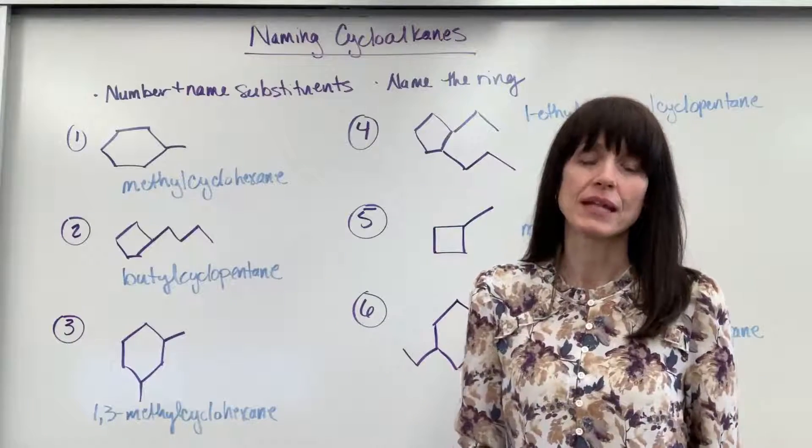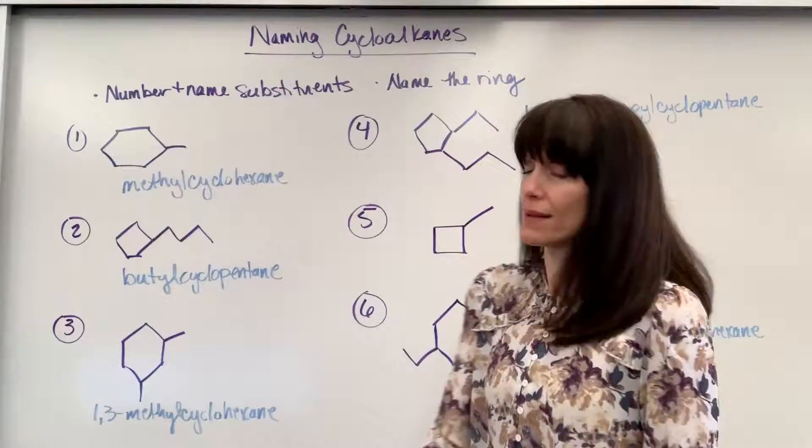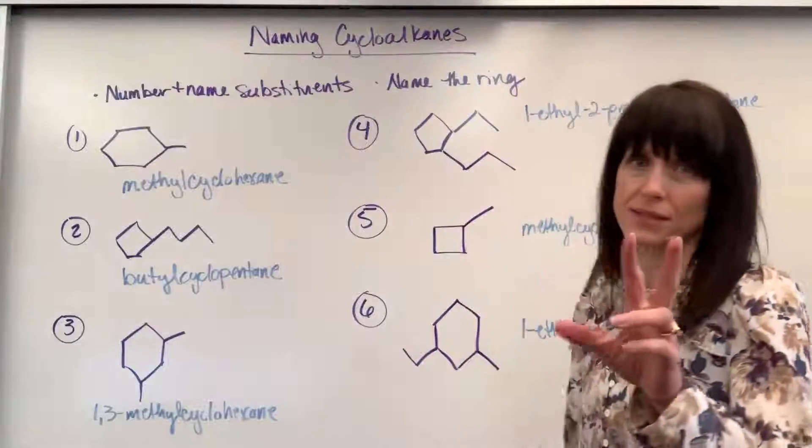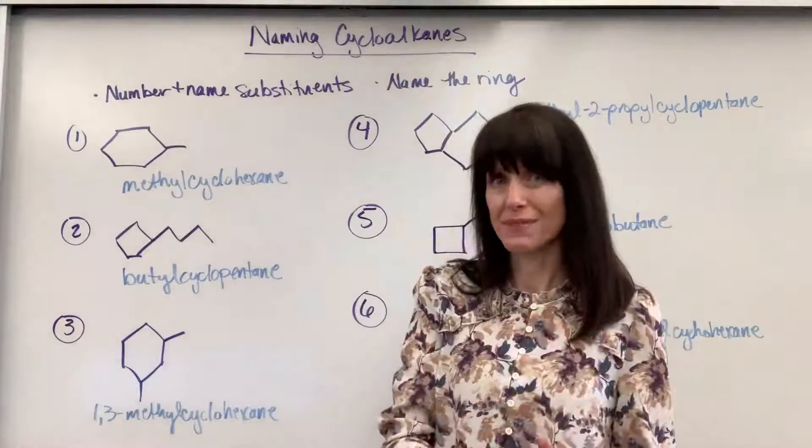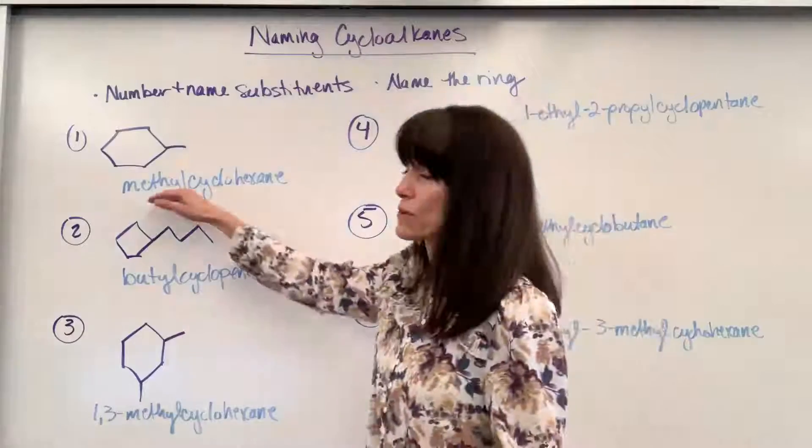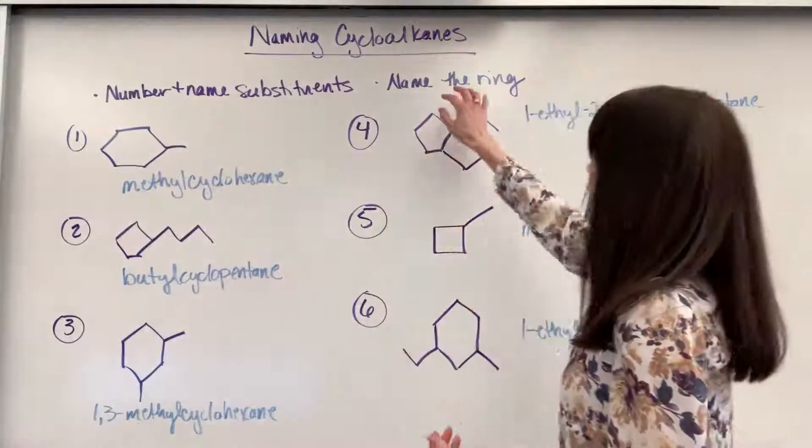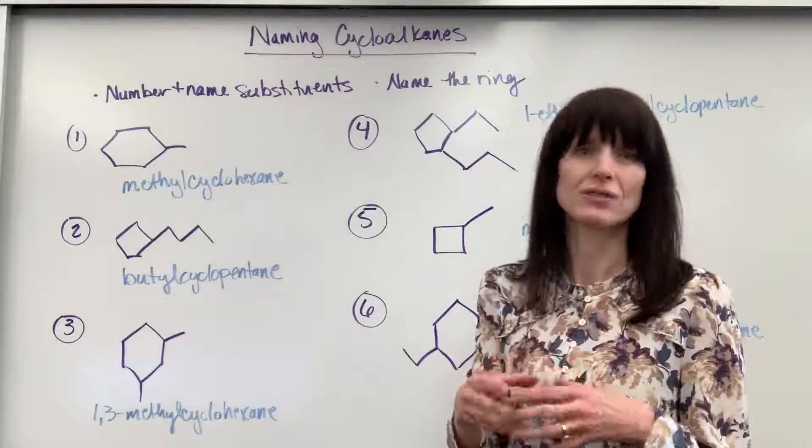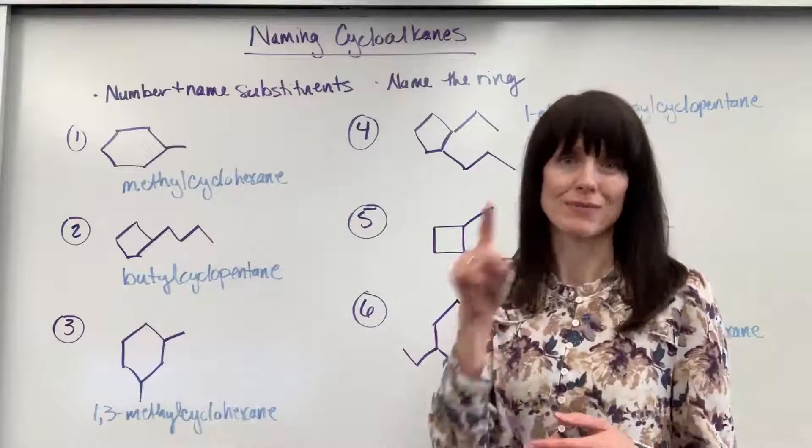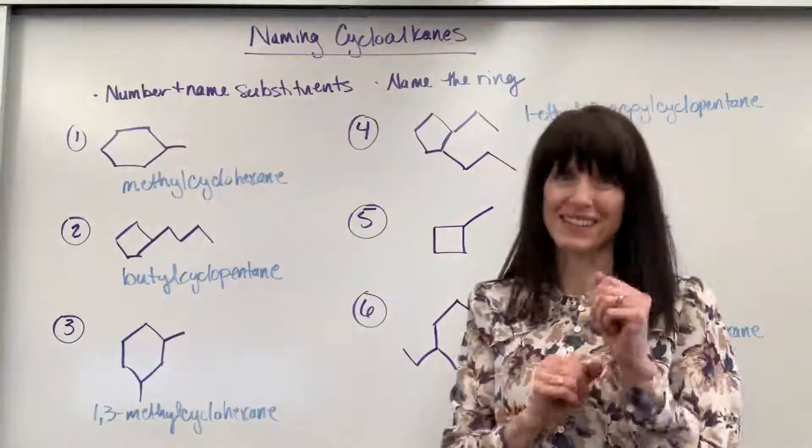Hi everybody. We are going to name cycloalkanes. Let's begin. Two things that you want to do. First, you number and name substituents. Look at those substituents, that's where you begin. And then to end, you always give the name of the ring. And remember for these rings, you just add the name cyclo to however many carbons you have. Let's practice.